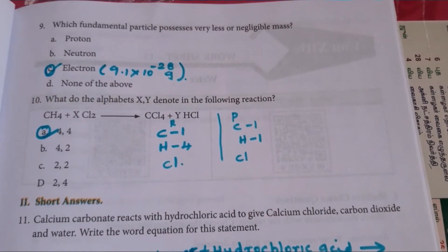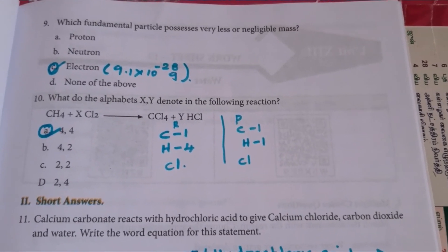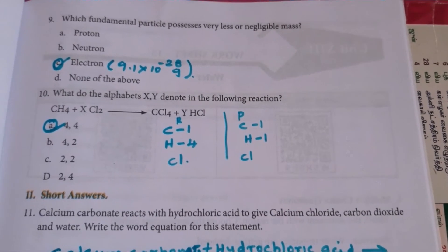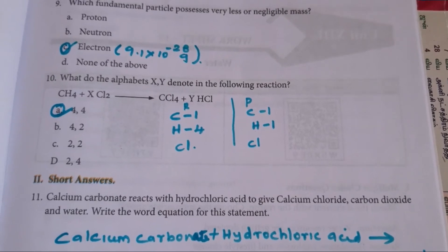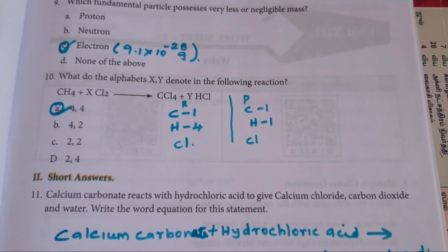Next one. Ninth one. Which fundamental particle possess very less negligible mass? So from that tabular column, we can find electron which has small amount of mass compared with proton and neutron. So the answer C, electron 9.1 into 10 power minus 28 grams.